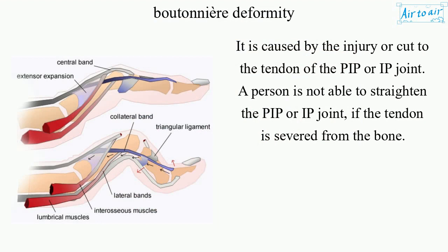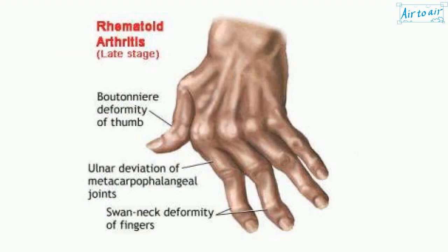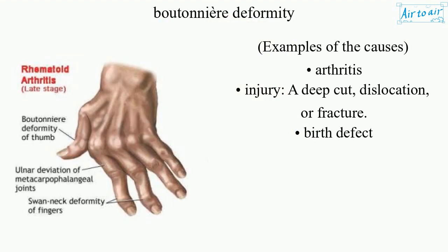It is caused by injury or a cut to the tendon of the PIP or IP joint. A person is not able to straighten the PIP or IP joint if the tendon is severed from the bone. Examples of causes include: arthritis, injury, a deep cut, dislocation, or fracture.